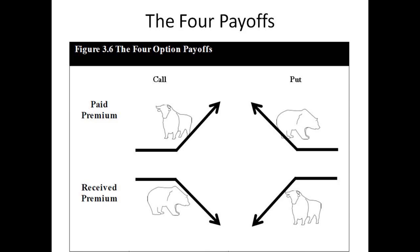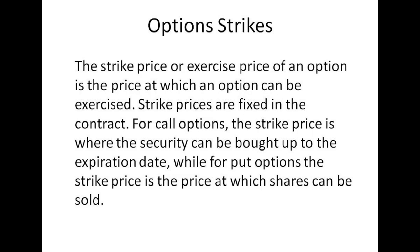Now that we understand what puts and calls are and how buyers and sellers make or lose money, let's look at the details specified in an options contract. The first thing is the strike price, also referred to as the exercise price, which is the price at which the option can be exercised. Strike prices are fixed in the contract. For calls, it's the price at which the underlying can be bought; for puts, it's the price at which the underlying can be sold.